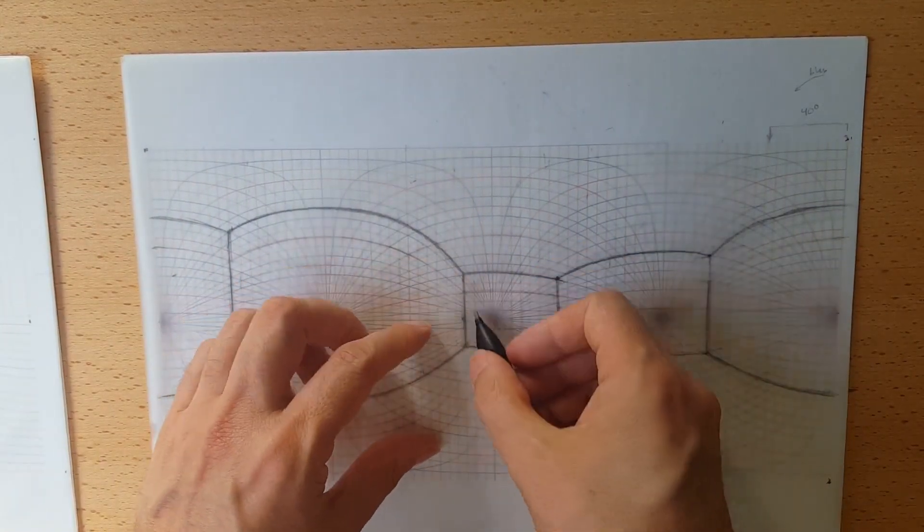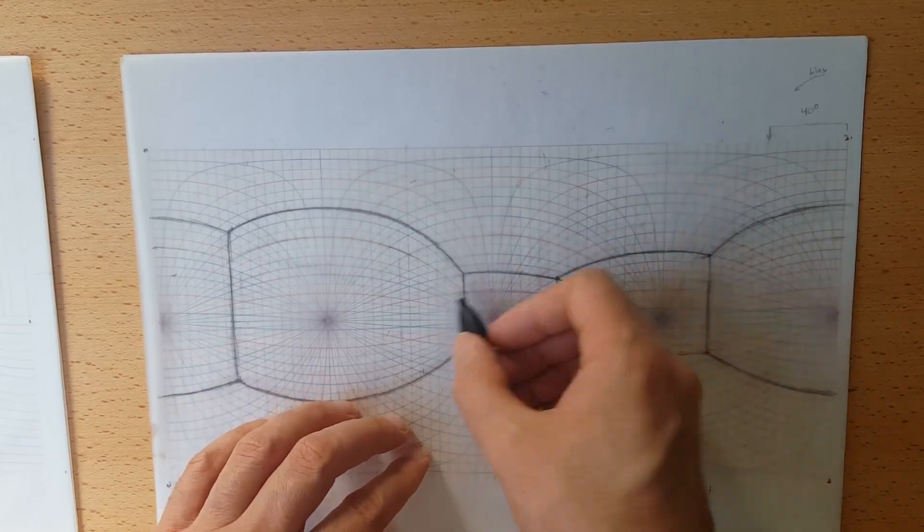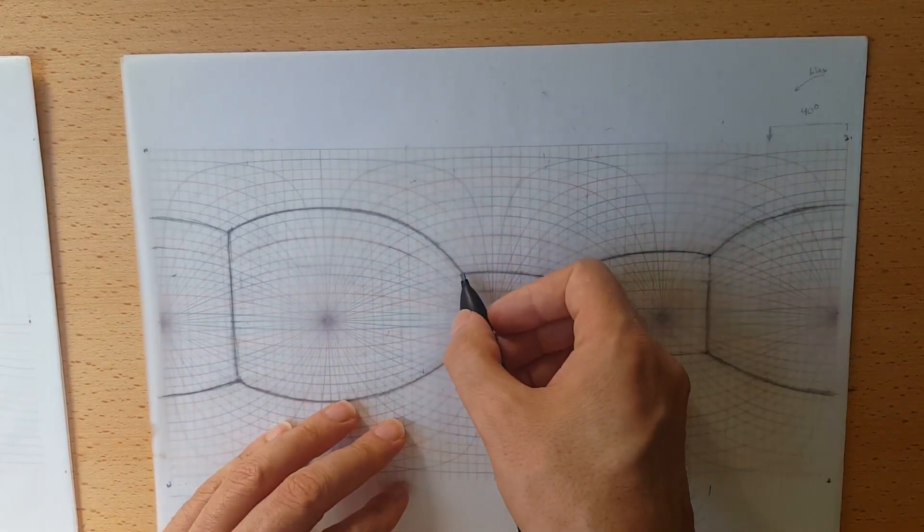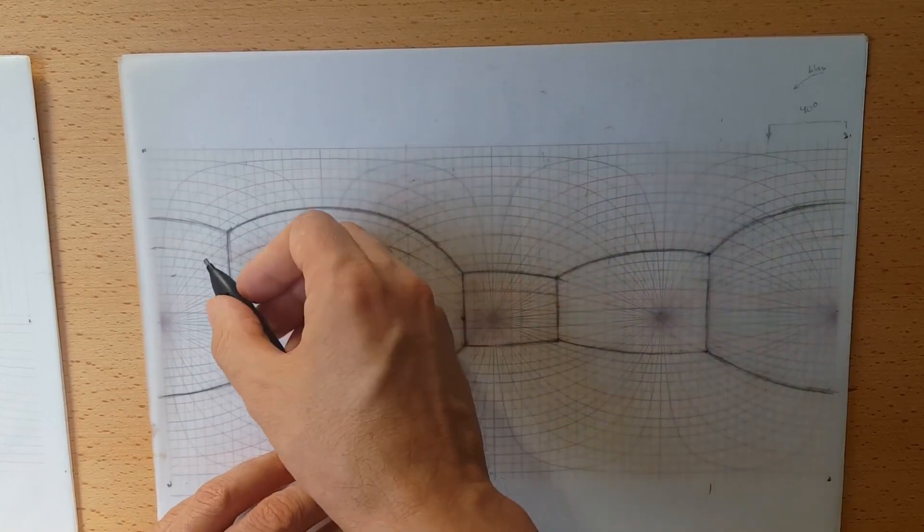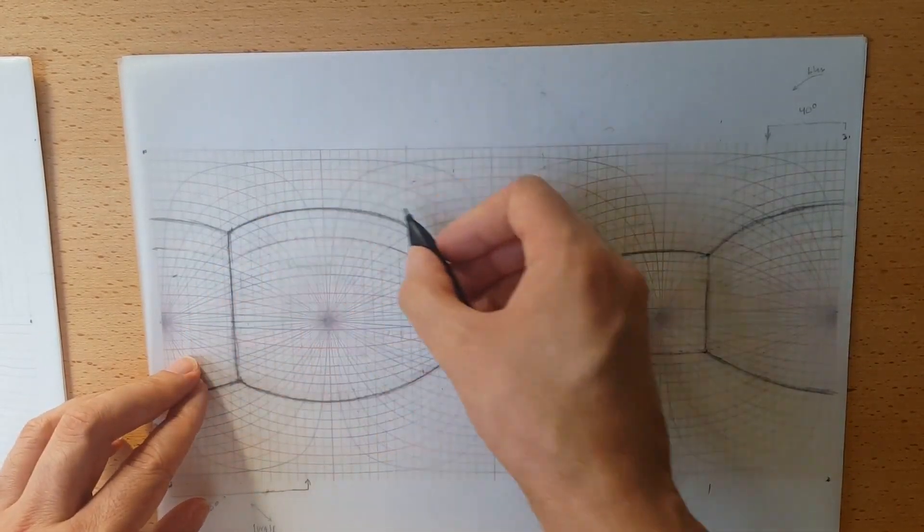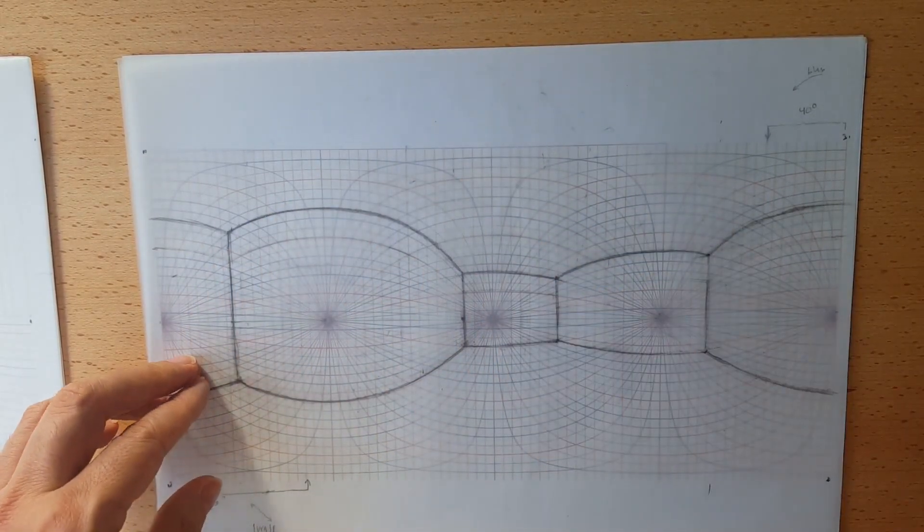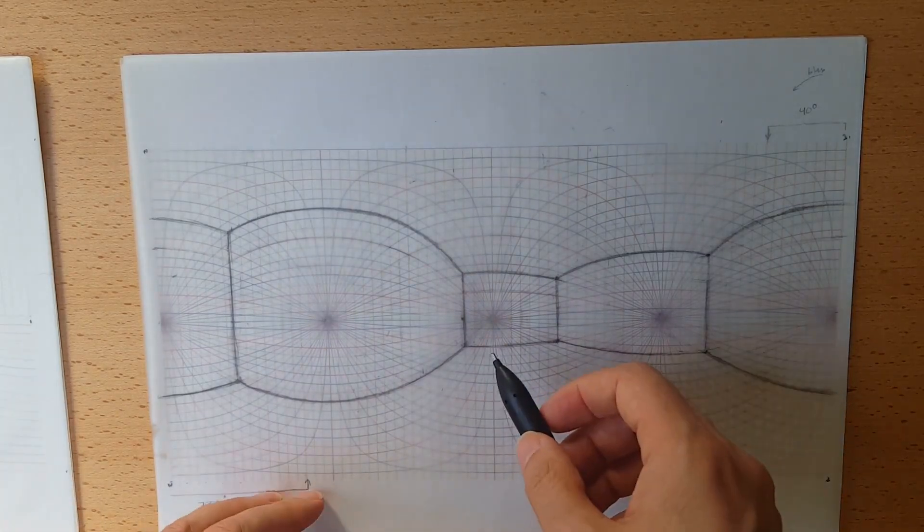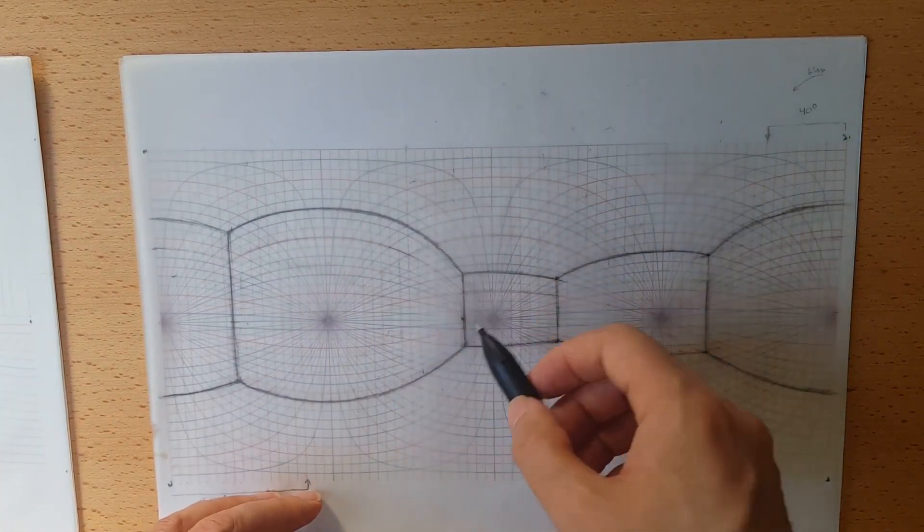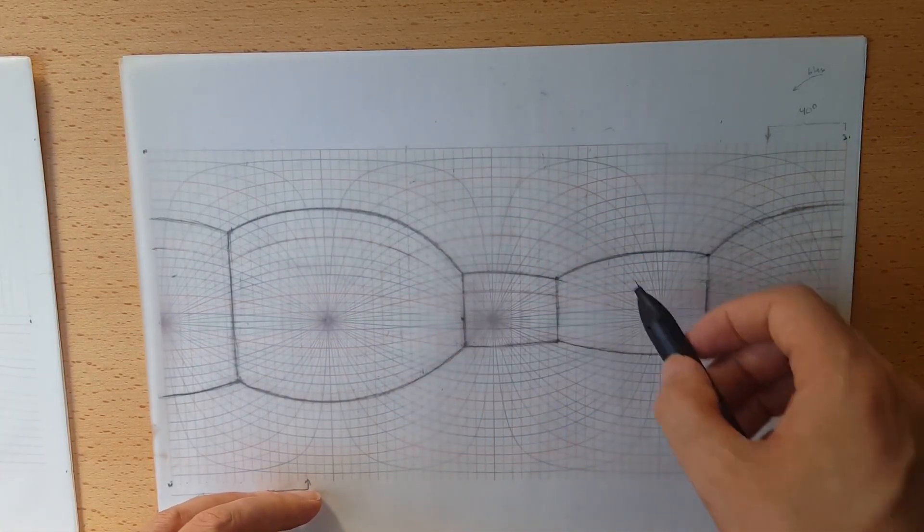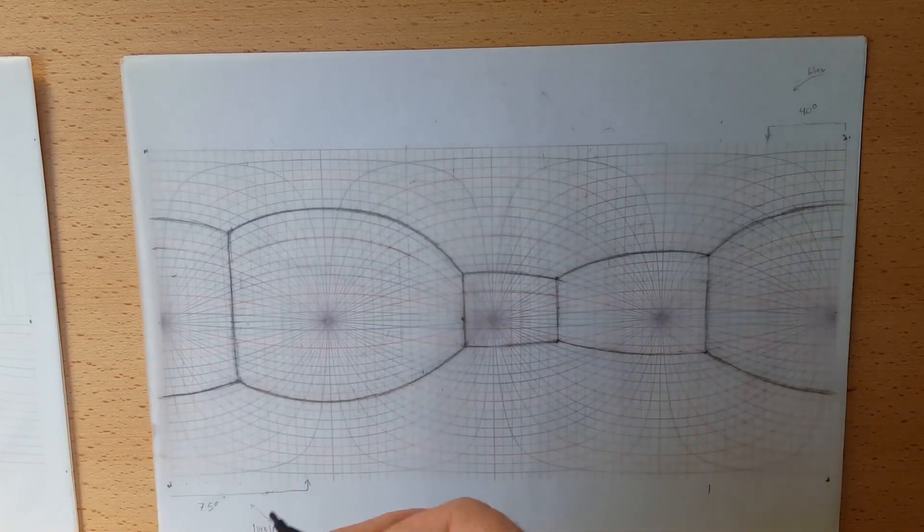You would get something like this, where you have a front wall obtained just by tracing horizontals from left to right, and then you have a left wall obtained by tracing horizontals from back to front. You can use these walls as guidance to draw objects and people inside this space.